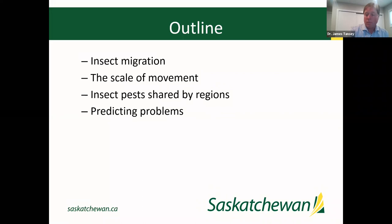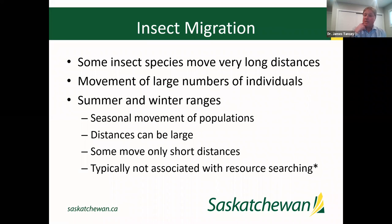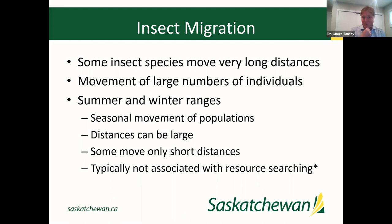Getting into insect migration: some species move very long distances. As individuals, they can cover a thousand kilometers a day, which seems remarkable for relatively small critters. This can contribute to overall migratory patterns of tens of thousands of kilometers. Typically this involves movement of large numbers of individuals, though small numbers can also be lifted and moved with storms. What we'll be talking about specifically today are more broad-scale, population-level movements.